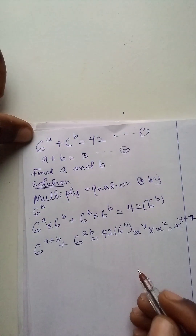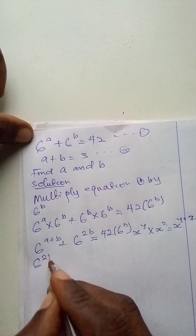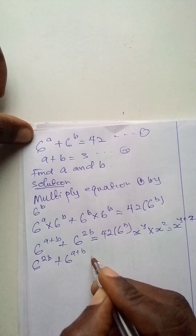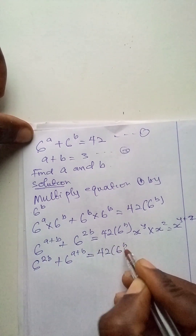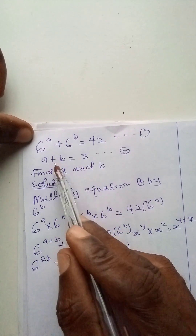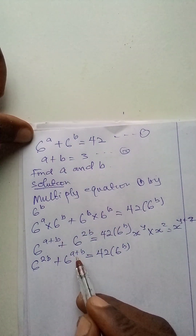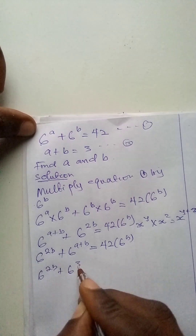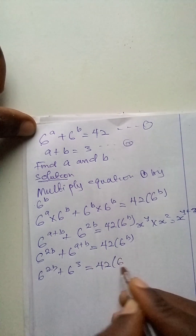Now let me simplify this. Rearranging, we have 6 to the power 2B plus 6 to the power A plus B, is equal to 42 times 6 to the power B. Let us remember equation 2: A plus B is equal to 3. So I will substitute 3 for A plus B.